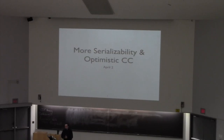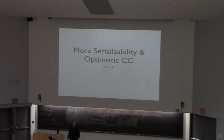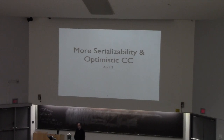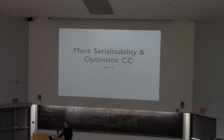Today we're going to continue with our discussion of transactions. We're going to resume where we left off on Monday, talking about serializability and what it means for a particular execution of a sequence of transactions to be correct. We're also going to move on to something called optimistic concurrency control, which takes an optimistic view — rather than pessimistically protecting you from bad situations, it assumes everything will go well and rolls back if something actually goes wrong.